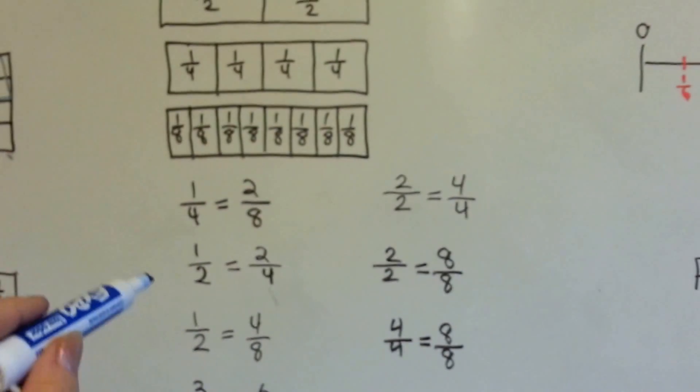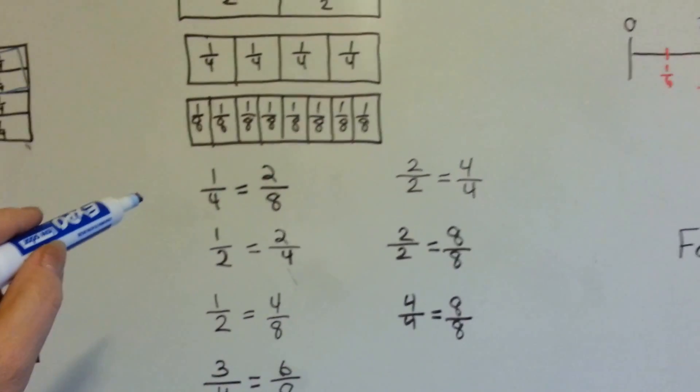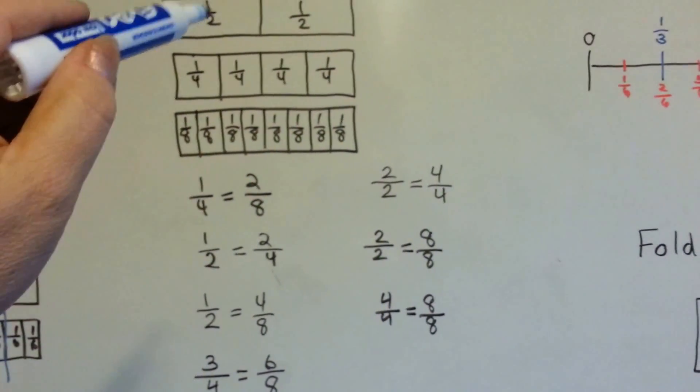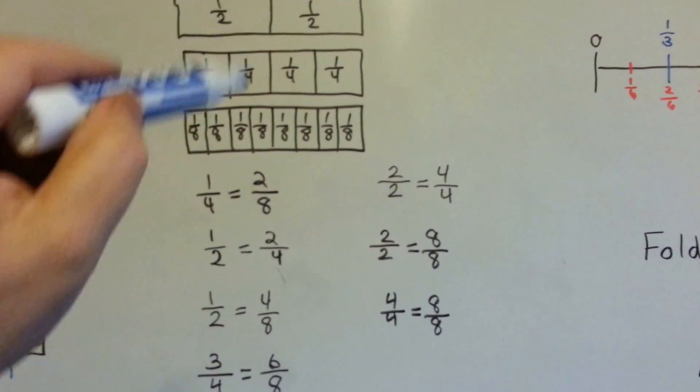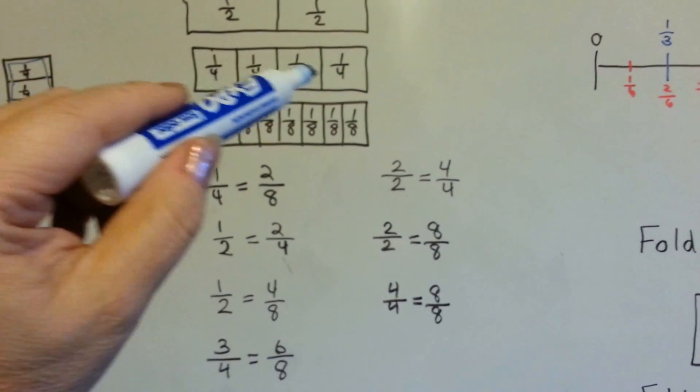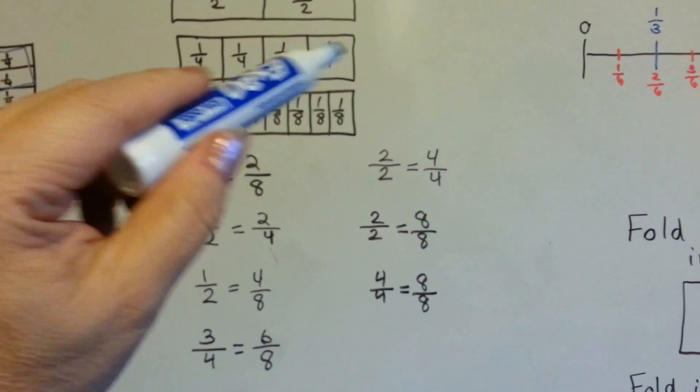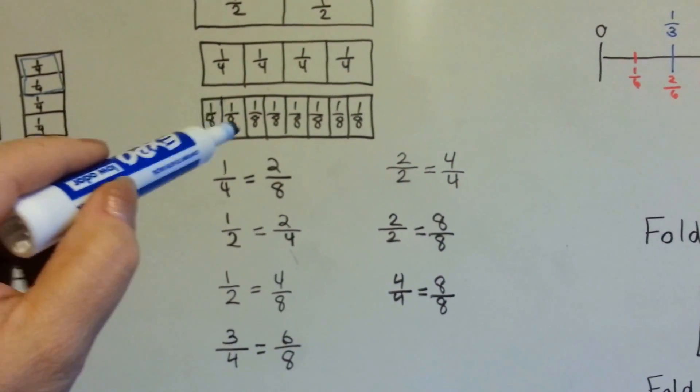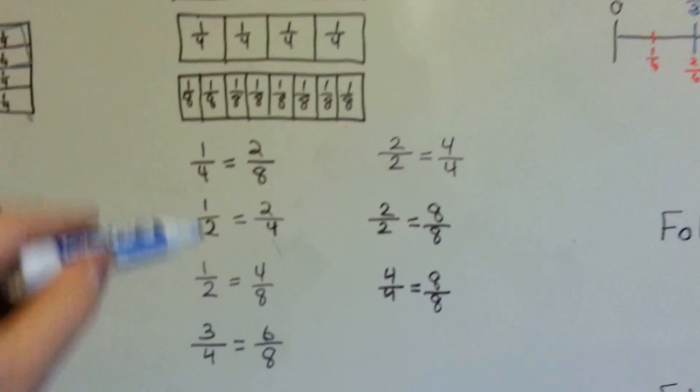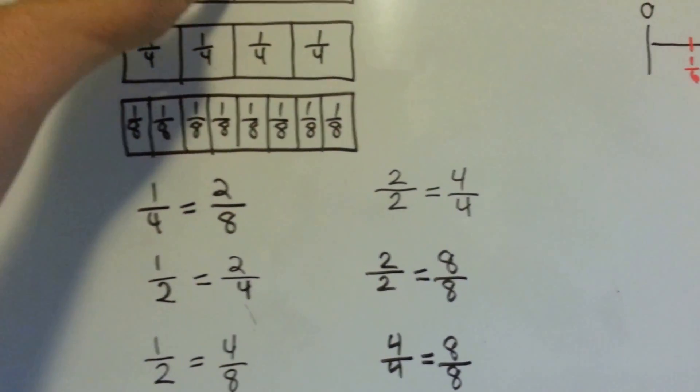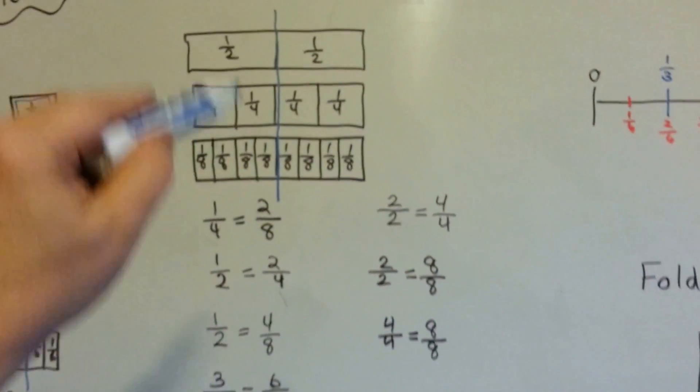Now we're going to get a little bigger here. Let's see if I can get it all in the picture. We have a half and a half, split down the middle. This one is the same size, but it's split into fourths. This one's the same size, but split into eighths. So you can see where the half mark is.